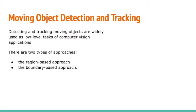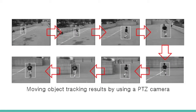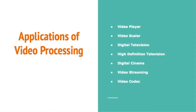Moving object detection and tracking is widely used for low-level tasks in computer vision applications. There are two types of approaches: region-based approach and feature-based approach. Here is an example where an image is being tracked using a moving and tracking detection application, and this shows tracking of human movement using a PTZ camera.